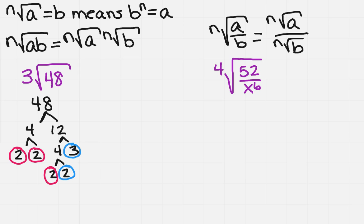That means I'm going to have the cube root of 2 cubed times 2 times 3 is 6. So the cube root of anything cubed is just that number. And then I'm going to get the cube root of 6. So that's going to be your final answer.